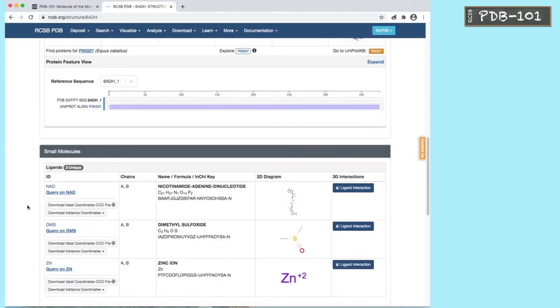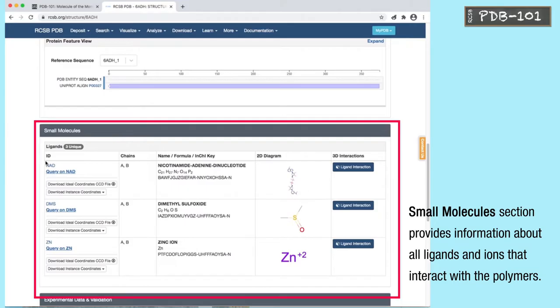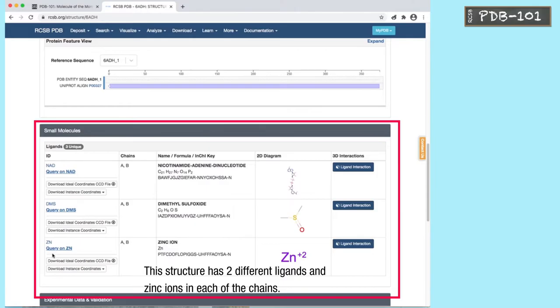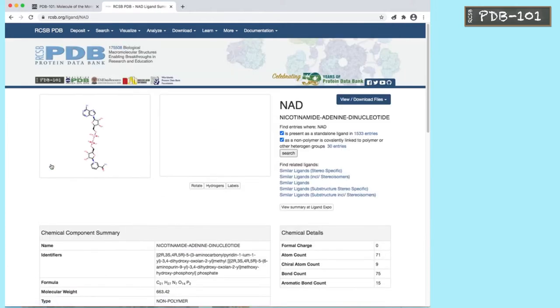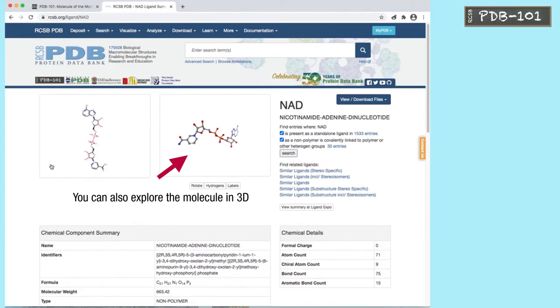The small molecule section provides information about all ligands and ions that interact with the polymers. This structure has two ligands and zinc ions in each of the chains. Clicking on the small molecule ID allows us to access more information about it. You can also explore the small molecule in 3D.